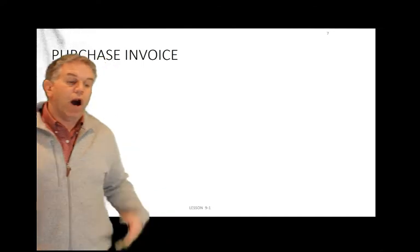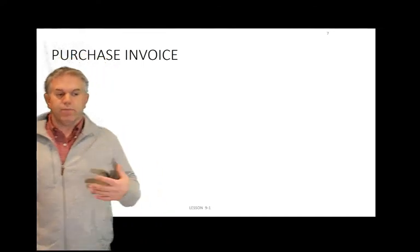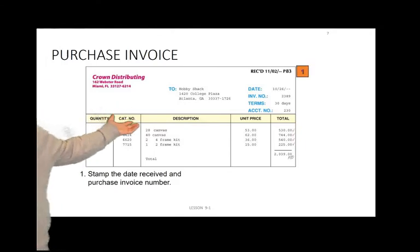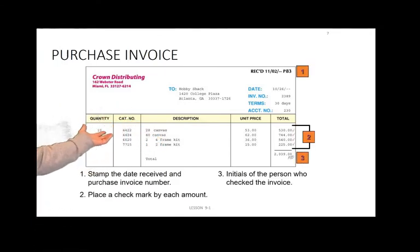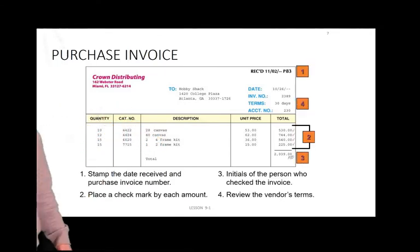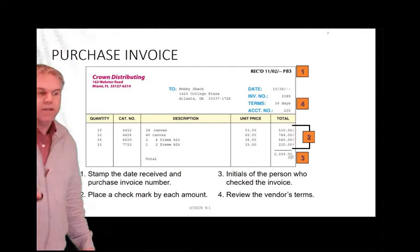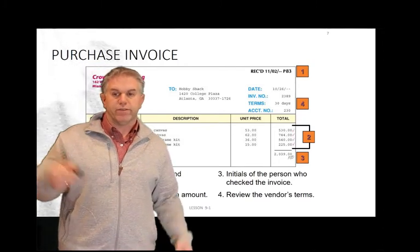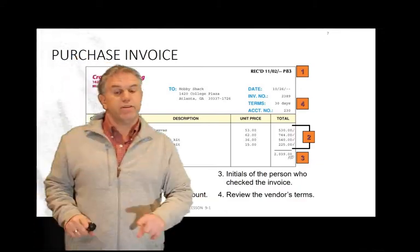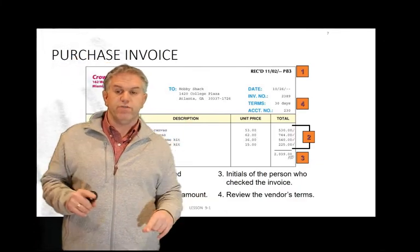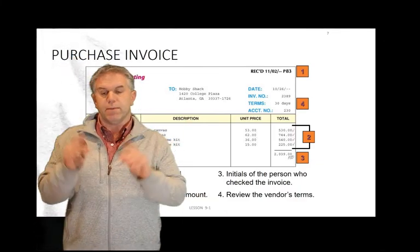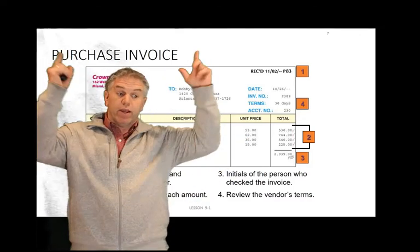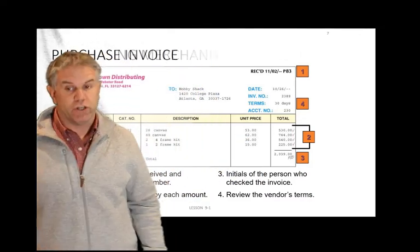Our source document — and we always talk about having that paper trail — is going to be a purchase invoice. The biggest thing you'll notice in the transactions is a letter P or the words 'purchase invoice.' Every time it says P or purchase invoice as your source document at the end of a transaction, that's your red flag: use the purchases journal.